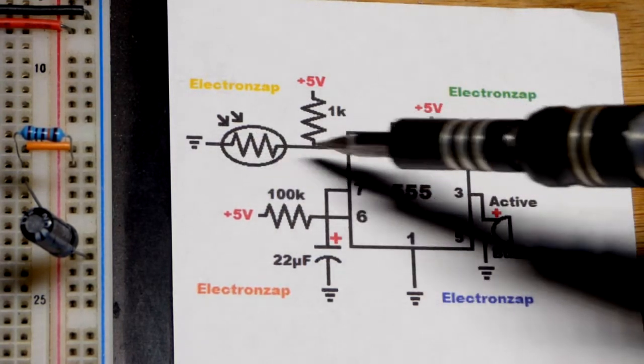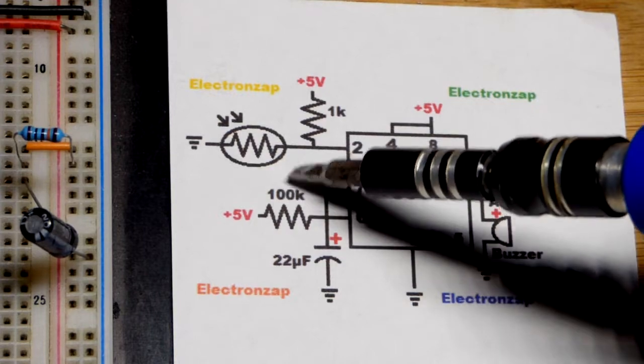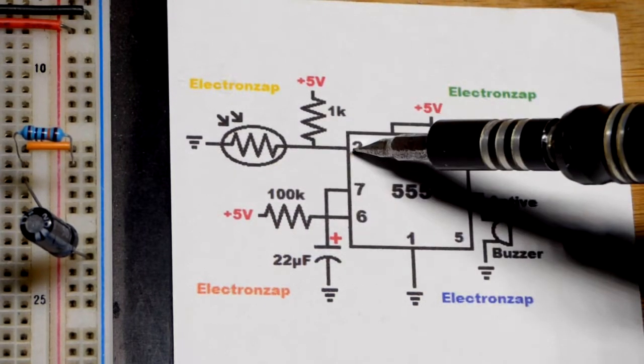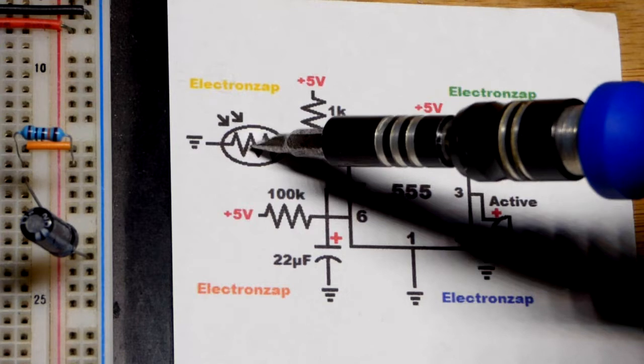At two-thirds supply voltage, pin 7 connects to ground as does the buzzer, so it stops buzzing. Now it will stay off until we get another low input.